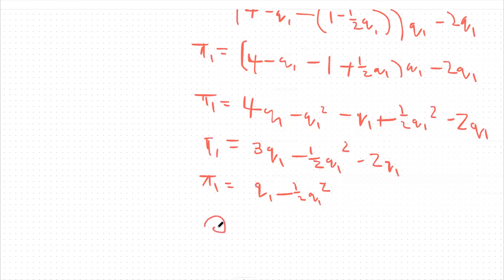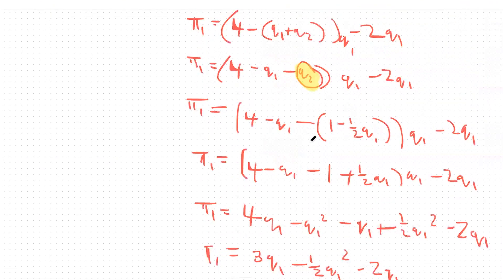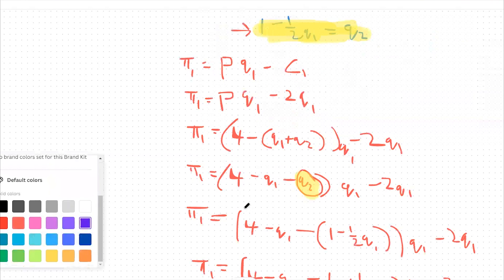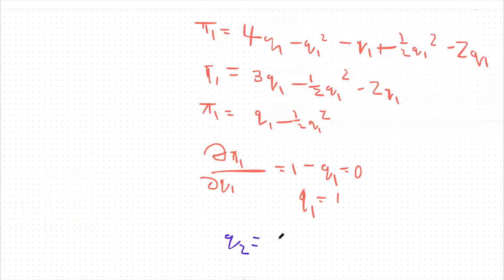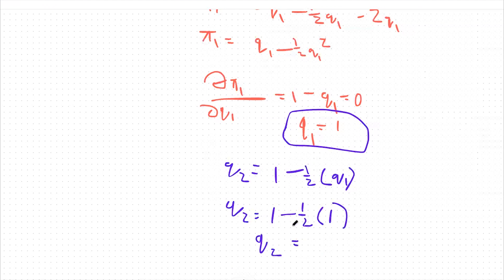As always, we take the derivative of this profit function with respect to Q1 and set it equal to zero. That gives us one minus Q1 equals zero, so firm one produces Q1 equals one unit. We can plug that back into firm two's reaction function: Q2 equals one minus one-half times one, so firm two will produce one-half a unit.